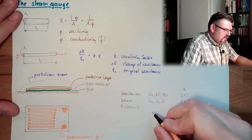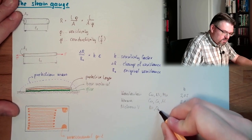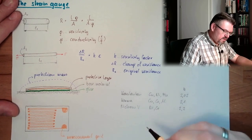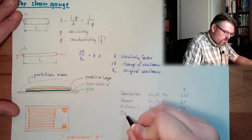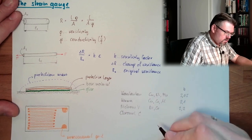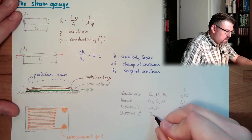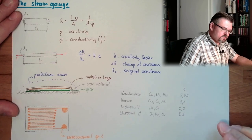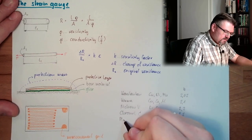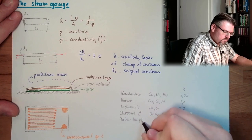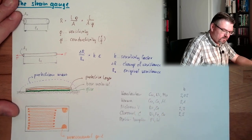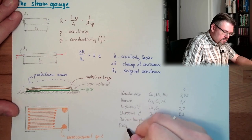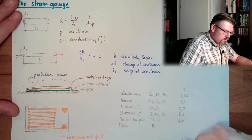You see, these are typical values. Typical values. This is chromel. This is nickel, iron and chrome. This is 2.5. Platinum tungsten. This is Pt and tungsten, of course. 4.0. Platinum 6.0.